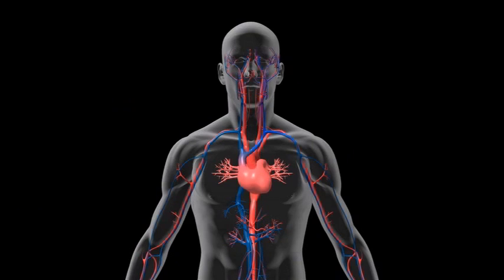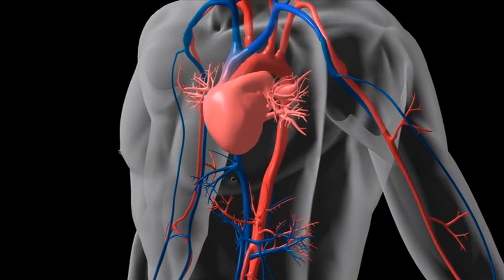One measurement method of arterial stiffness is pulse wave velocity, or PWV. PWV relates to the stiffness of arteries and is the speed with which pulses of blood from heart contractions are propagated away from the heart.